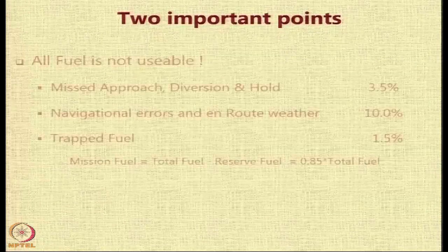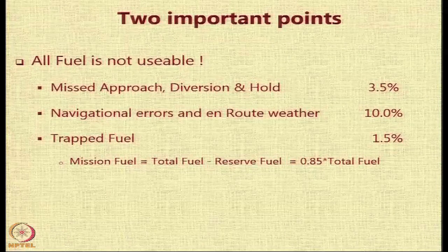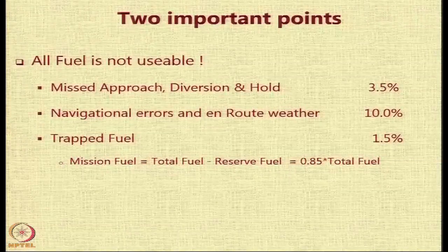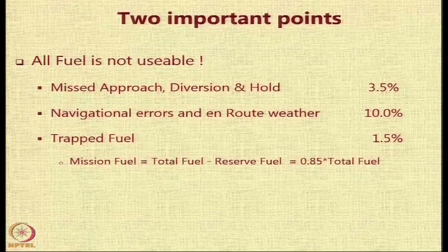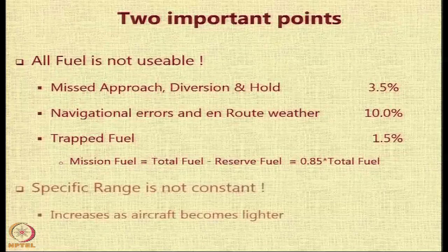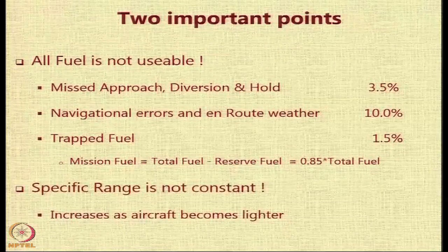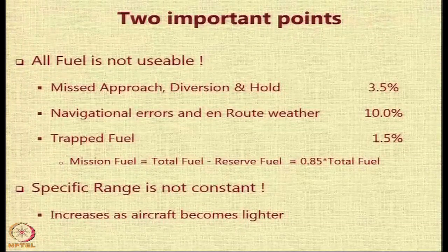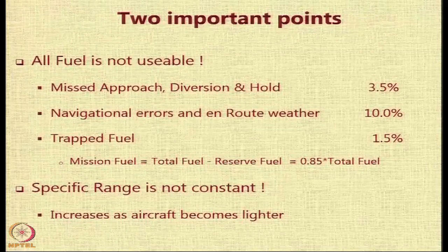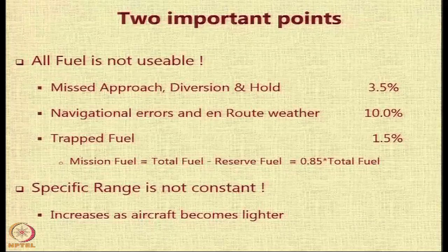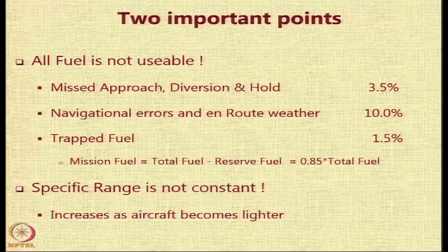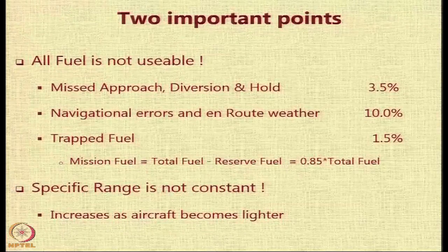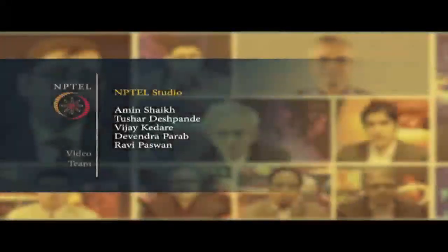Two important points to note: first, not all fuel is usable — mission fuel is limited by the reserve fuel requirement. Second, the specific range of 0.19 nautical miles per kilogram is not actually constant; as the aircraft flies and becomes lighter, it consumes less fuel and travels farther per kilogram. However, in this simplified analysis, we assume it to be constant. Thanks for your attention — we will now move to the next section.